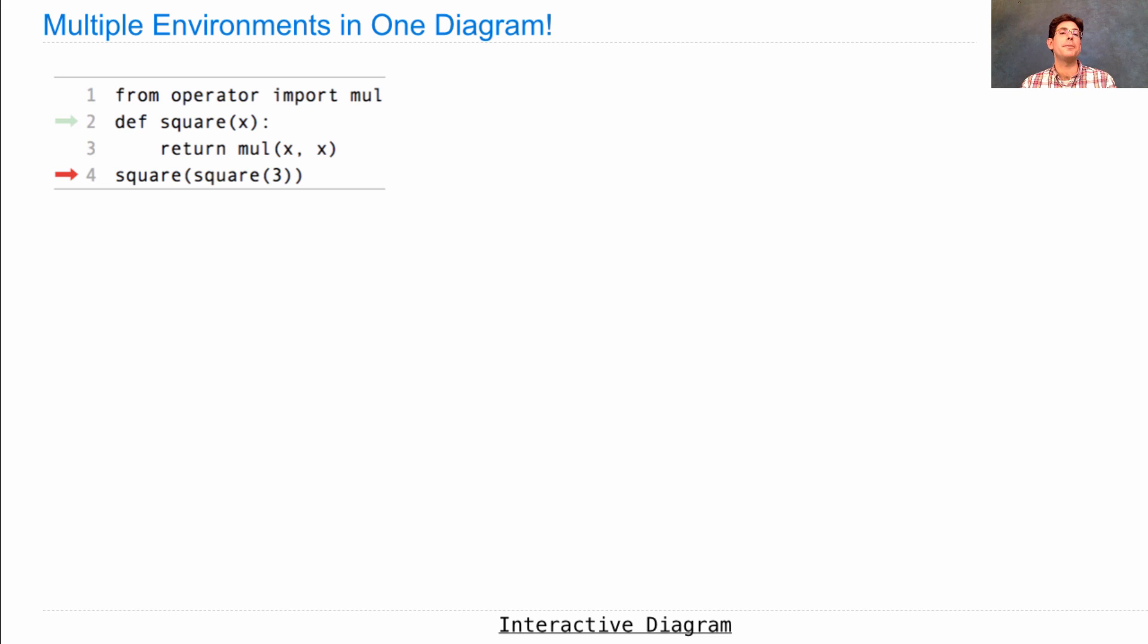So what do I mean by there are multiple environments in one diagram? Well, let's look at this example from last time, where we define square as just multiplying x by itself, but then we call it twice in a nested fashion. So we're going to square the square of three. And we saw that that gave us 81, but here's why. Before we actually evaluate square square three, but we've already executed the import and the def statement, this is our environment. A single global frame with the name mul bound to the function that multiplies and the name square bound to the function square, which we defined.